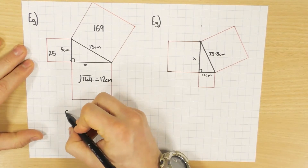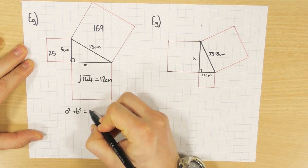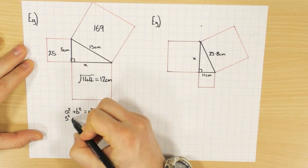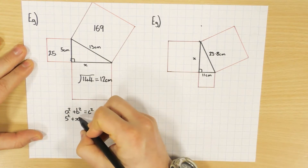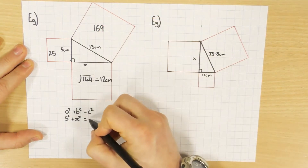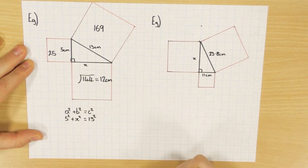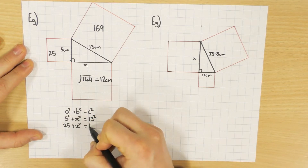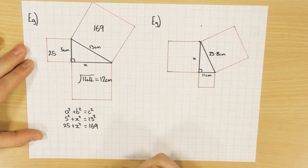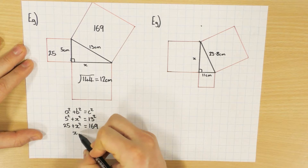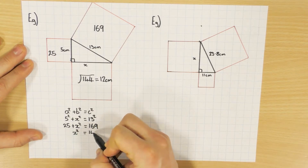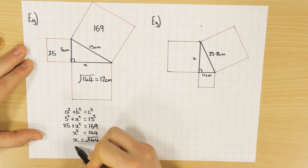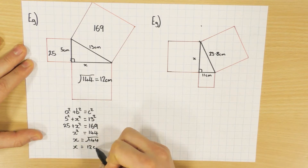Let me go through and do it the other way. We've got a squared plus b squared equals c squared. I know the smaller length is 5, so substitute that in: 5 squared plus x squared equals 13 squared. Simplify: 5 squared is 25, and 13 squared is 169. A little bit of rearranging — take away 25 from both sides — so x squared equals 144. Square root both sides: x equals the square root of 144, which is 12. So that's 12 centimetres — both ways give the same answer.